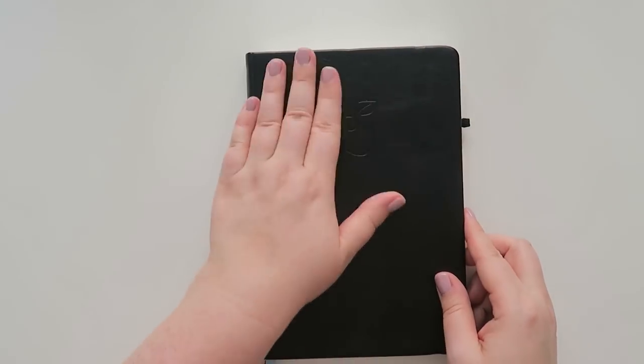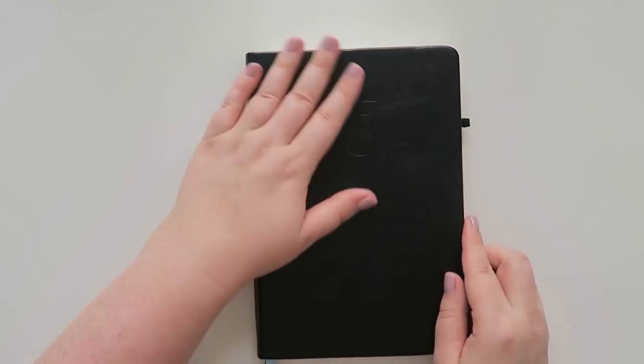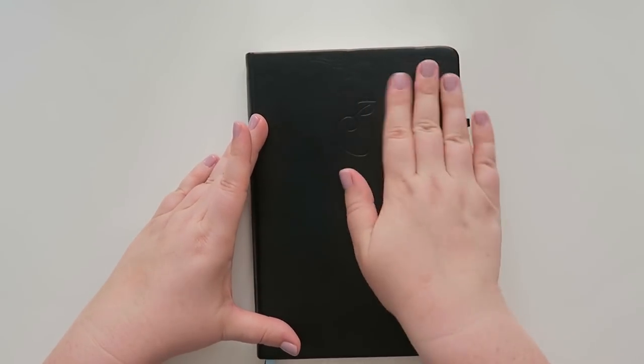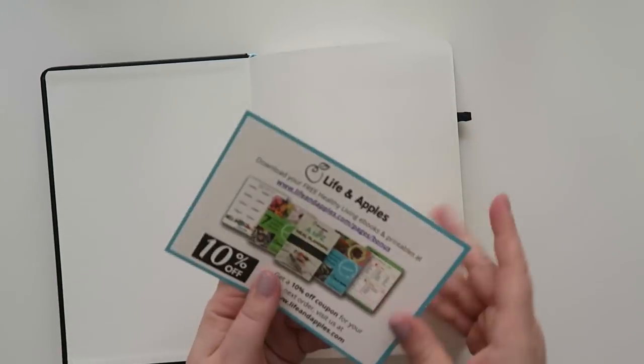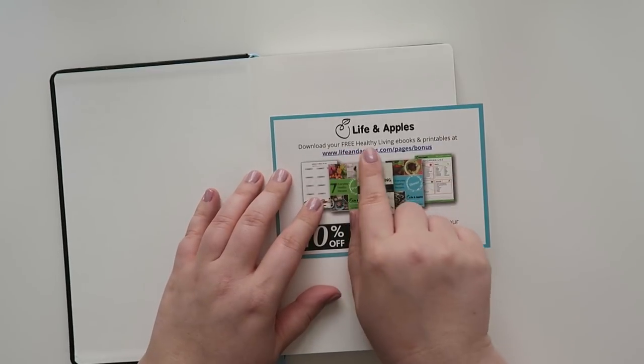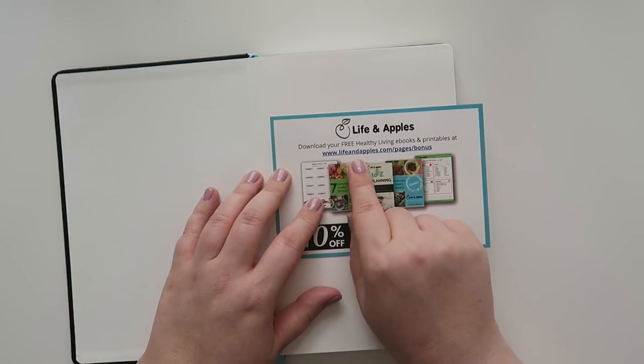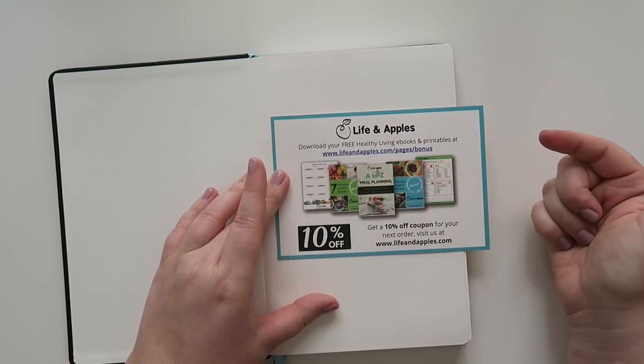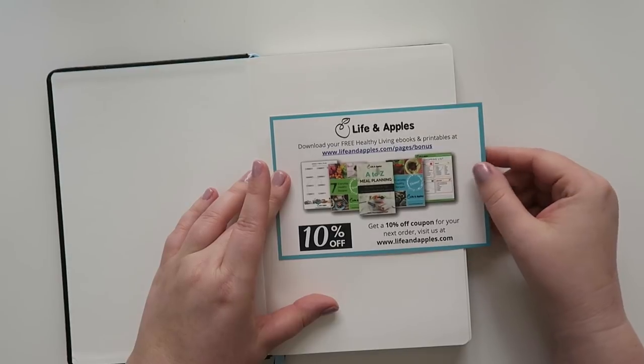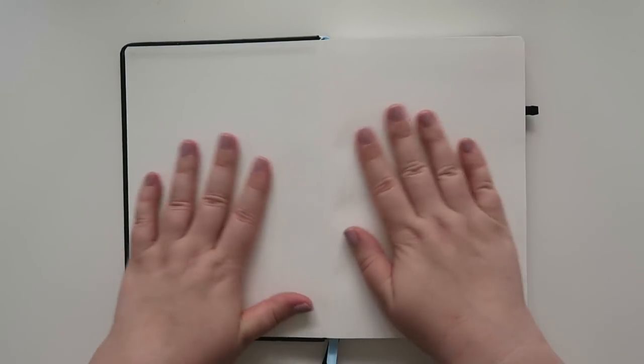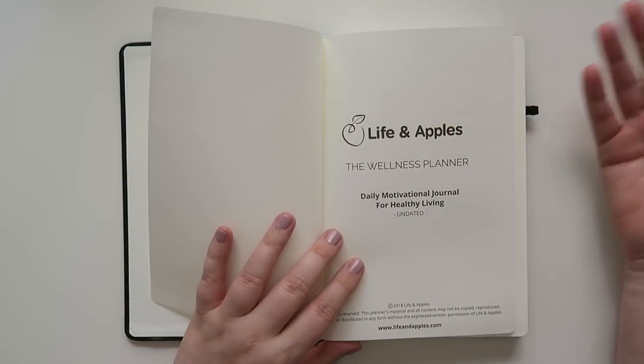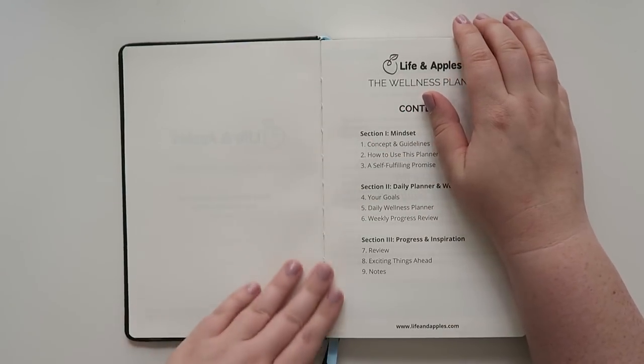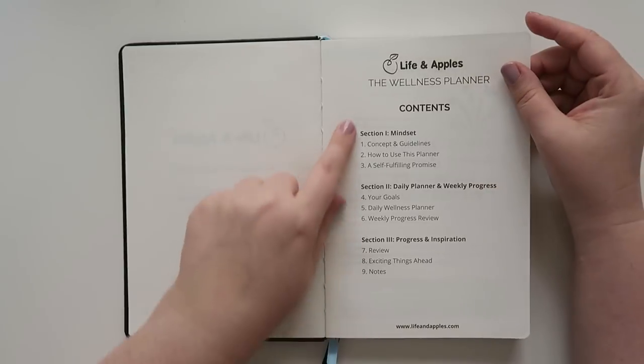So let's open this bad boy up. And it does feel nice. It's not like a gritty feeling. It's like a very smooth feeling, even though there's definitely like, it looks like there's texture to it, but there's not. So anyway, there's a little card in there that says download your free healthy living eBooks and printables at lifeandapples.com slash pages slash bonus. And it looks like you can sign up to get a 10% off coupon on your next order. If you sign up there, that's cool. All right. So first impression of opening it, I hadn't opened it yet. The paper feels nice. It feels thick, but it's like the front page. So it might feel a little different. So on the front, it just says life and apples, the wellness planner undated. All right. So, oh, this is like stitch bound. Oh, that's cool.